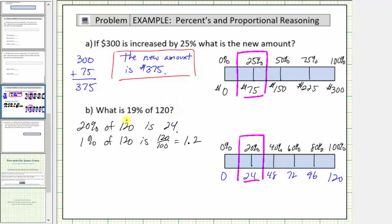So 19% of 120 is 24 minus 1.2, which equals 22.8. So 22.8 is 19% of 120.